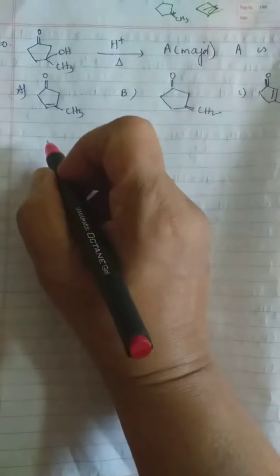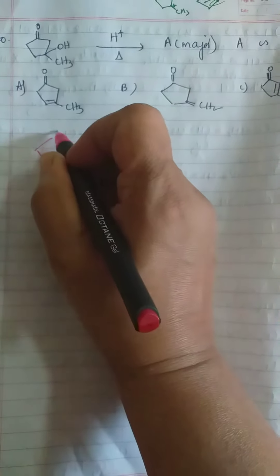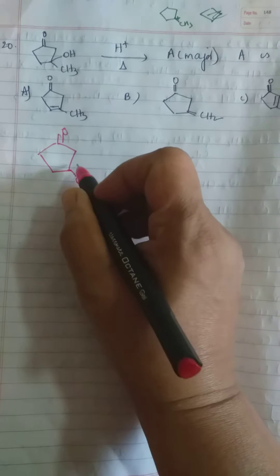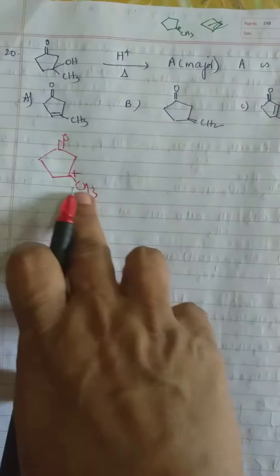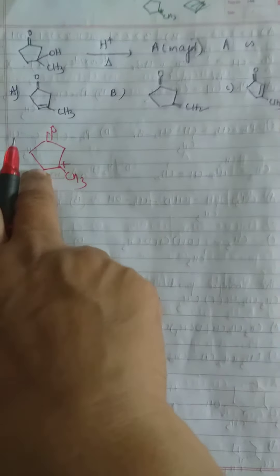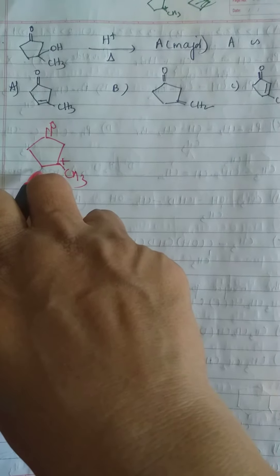Now we know that one H has to be eliminated. If H is eliminated from here, suppose one H is removed from this CH2. If one H is lost from here, you'll get a double bond here.